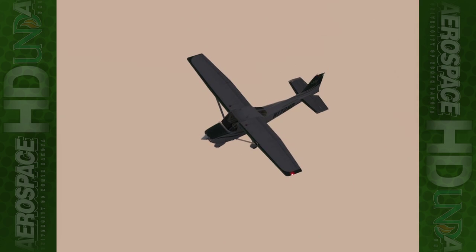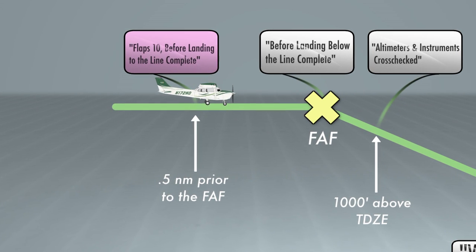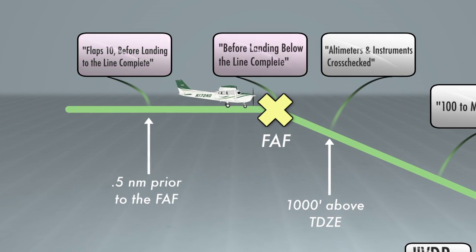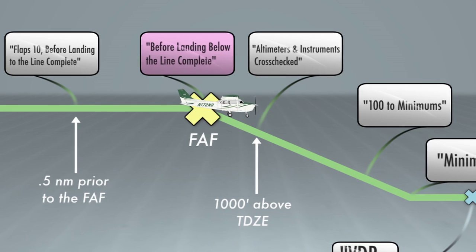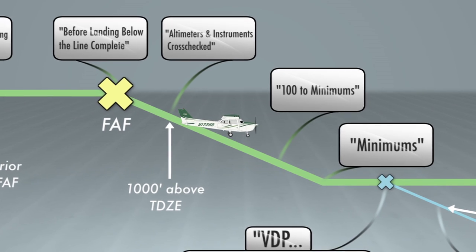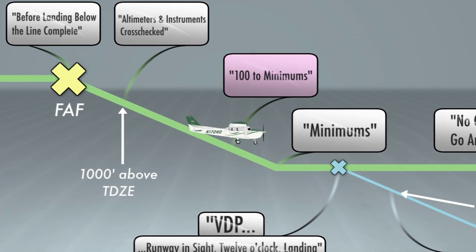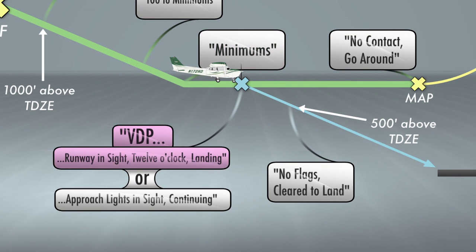To enhance situational awareness, the UND Aerospace Standardization Manual requires several call-outs during the entire approach profile. Upon arrival at a half nautical mile from the final approach fix, the pilot flying shall call out 'flaps 10, before landing to the line complete.' Upon crossing the final approach fix, the pilot flying will call 'before landing below the line complete' and start the initial descent to land. At 1,000 feet above the touchdown zone elevation, the pilot flying will call out 'altimeters and instruments cross-checked.' As the descent progresses, at 100 feet above the MDA, the pilot will call out '100 to minimums.'